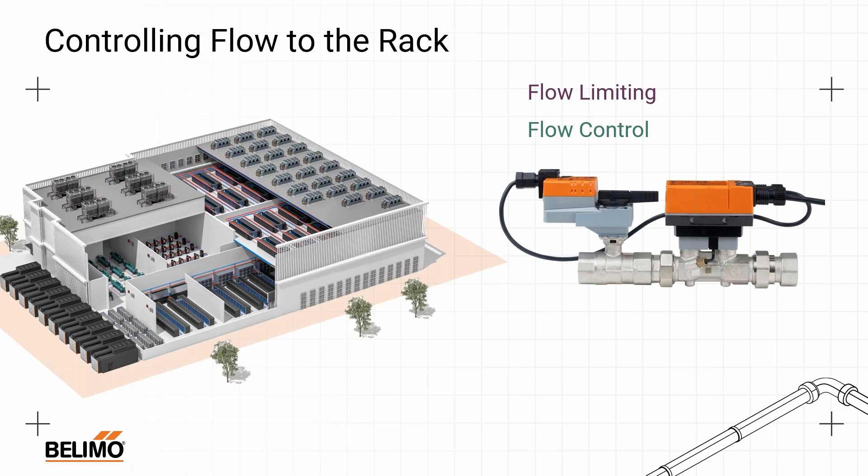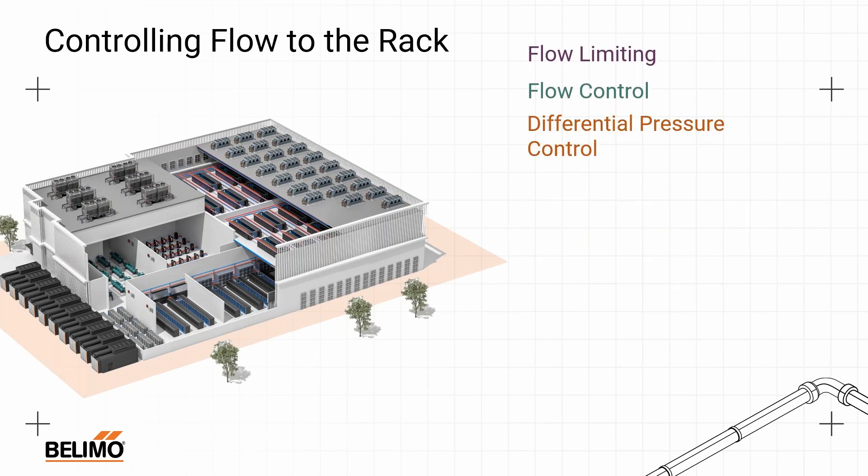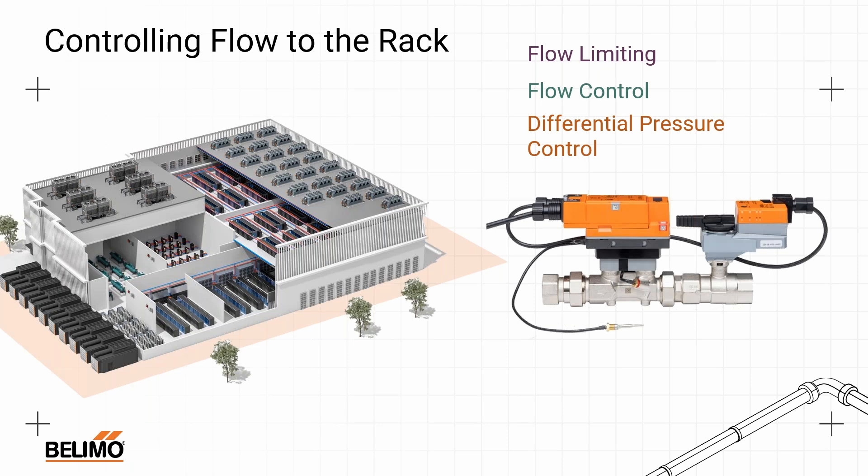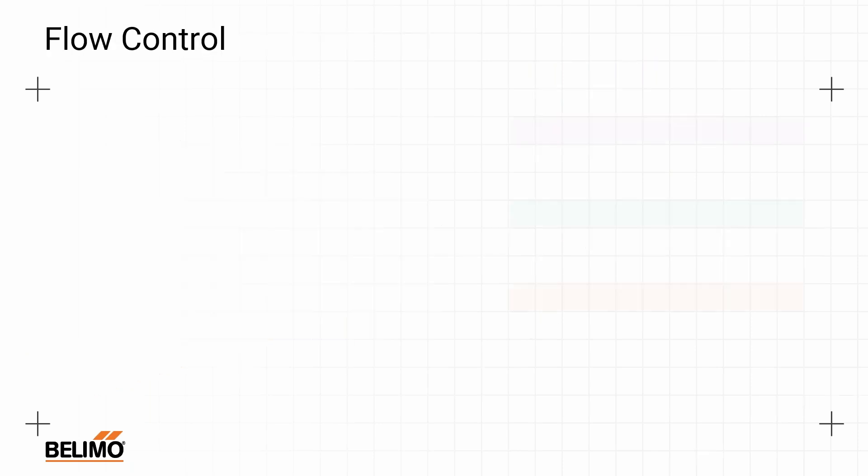We went from flow limiting to flow control, giving us extra versatility. Now let's talk about differential pressure control — this is a whole different way of thinking about it. Within the Belimo universe, that would utilize the Belimo energy valve and a differential pressure sensor, but the concept of controlling to a fixed differential pressure can be done in many different ways. Let's talk about why you would want to control to a differential pressure. If I can control directly to 10 GPM, why switch? What gain am I getting? Let's break down to the rack level how these controls work.